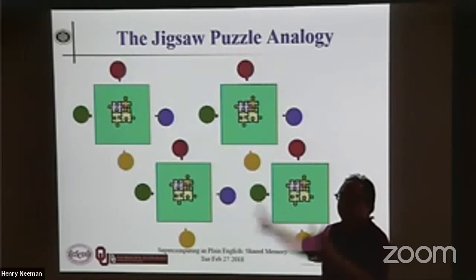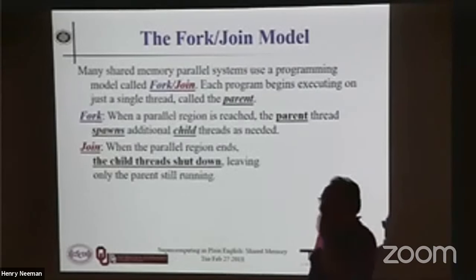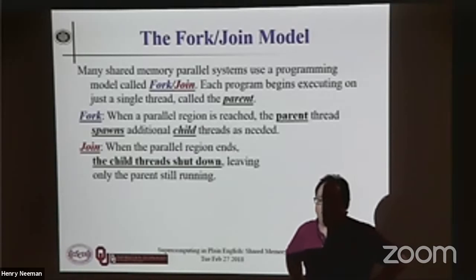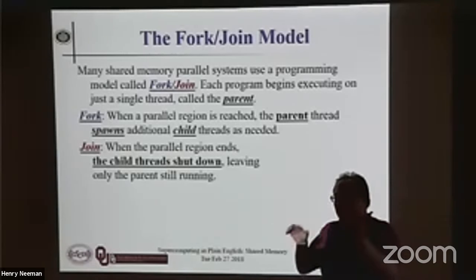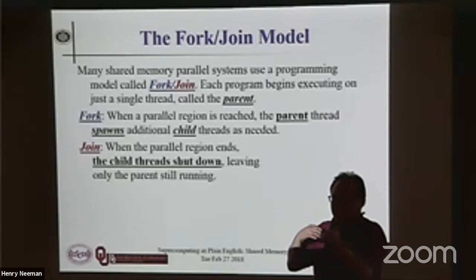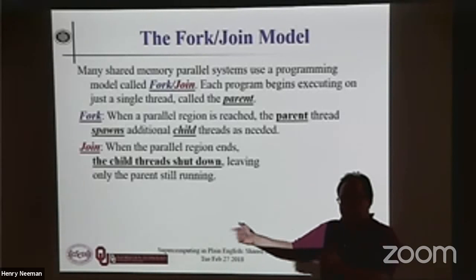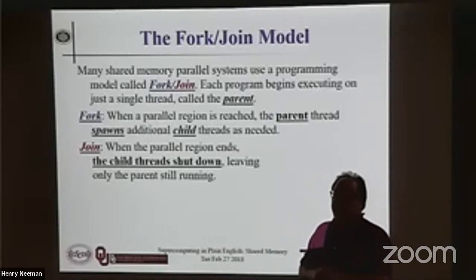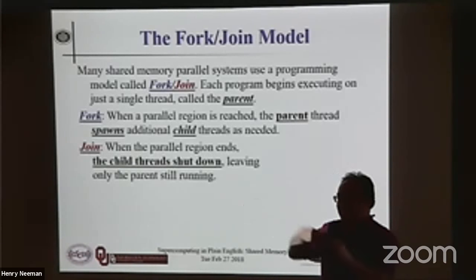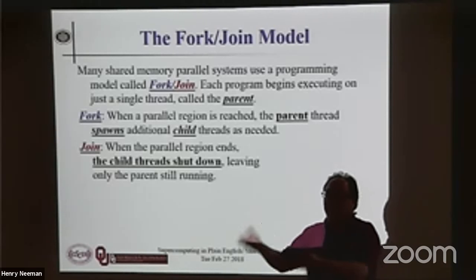Now let's get to shared memory multi-threading. Most shared memory parallelism nowadays uses something called the fork-join model. The idea is: I am chugging along doing my thing — I'm a flow of execution — and I realize I need to do some stuff in parallel. So I'm going to fork a bunch of additional threads: additional flows of execution that share the same memory with me. Then we all do stuff for a while, and when they're done doing the stuff that needed to happen in parallel, they're going to shut down and I'll continue on my merry way. The main thread operates all the time; the child threads come and go as needed.